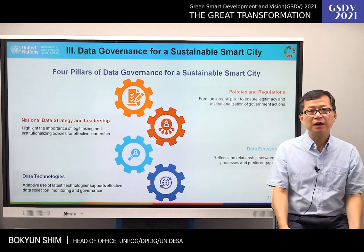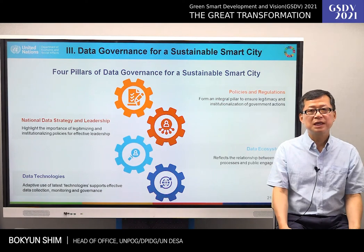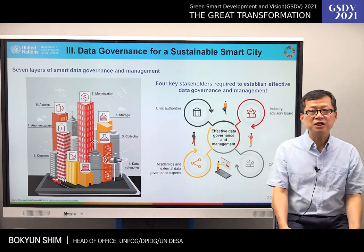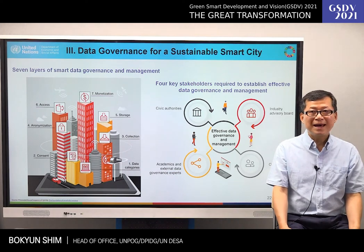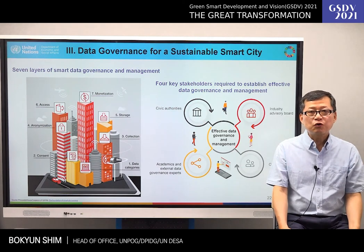The first and second pillars highlight the importance of legitimizing and institutionalizing policies for effective leadership. The third pillar, the data ecosystem, reflects the relationship between data processes and public engagement. The fourth pillar highlights the adaptive application of technologies in supporting data use and governance. Smart city data governance and management must enable cities and businesses to turn data into benefits while ensuring public buy-in. Achieving those twin goals — benefits and buy-in — requires setting a smart data strategy at the start.